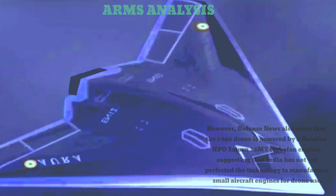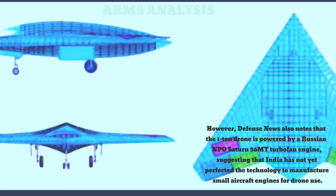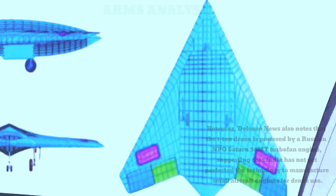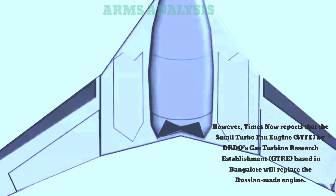However, Defense News also notes that this one-ton drone is powered by a Russian NPO Saturn-36MT turbofan engine, suggesting that India has not yet perfected the technology to manufacture small aircraft engines for drone use. However, Times Now reports that a small turbofan engine by DRDO's Gas Turbine Research Establishment based in Bangalore will replace the Russian-made engine.